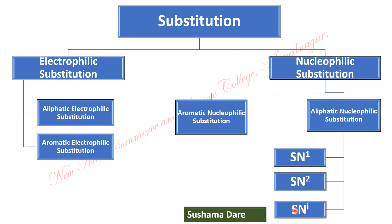All these types of reactions — SN1, SN2, and SNi — are carried out on SP3 carbon atoms. If the reaction is carried out on unsaturated carbon, that is SP2 carbon, then those reactions are termed SN1', SN2', and SNi' reactions. Today in this video, I am going to talk about the aliphatic nucleophilic substitution reaction, discussing the different terms one by one.